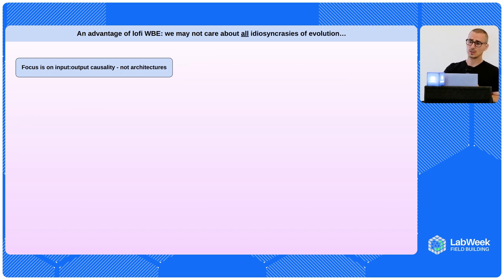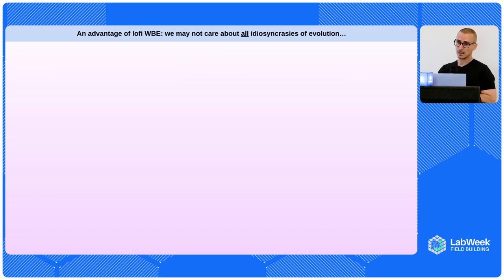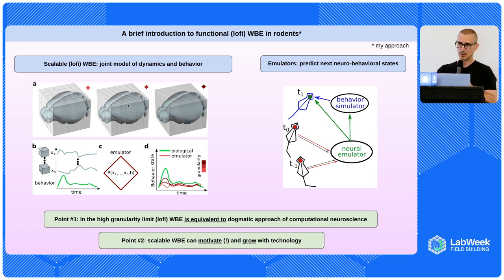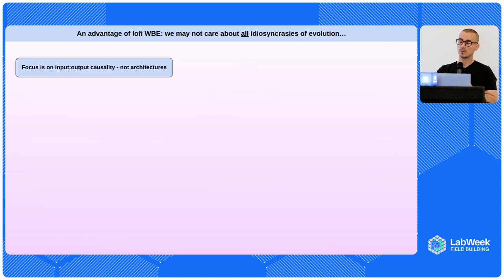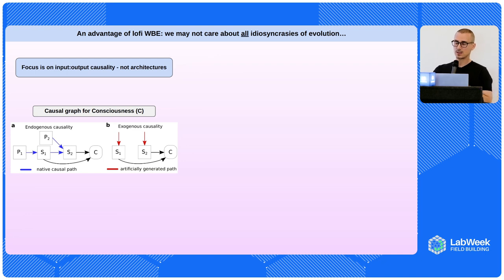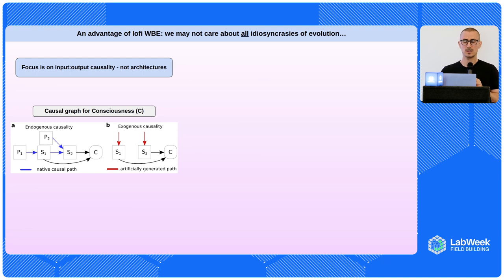One advantage of lo-fi whole brain emulation is that we may not really care about all the idiosyncrasies of evolution. If we can figure out at some scale that already gives us enough of an emulator capturing all the behaviors we're interested in, and maybe some conscious types of states, then maybe we can stop. The focus in lo-fi whole brain emulation is essentially on input-output causality, not necessarily the architecture — we don't have to engage with whether language model architectures approach those hypothesized by consciousness theories.